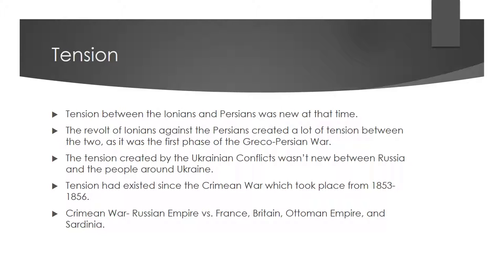One difference is the tension leading up to each conflict. The tension caused by the Ionian revolt was created by a single event, with not much past action between the two parties. But with the Russians and Ukrainians, it's a different story — the tension can be traced all the way back to the Crimean War in the middle 1850s, which pitted the Ottomans, French, and British against the Russians. The Russians lost, and this created early tension that eventually led to the bad relationship between the people of Ukraine and the pro-Russians.